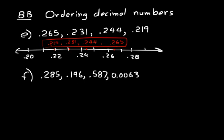Instead of .196, so that has to be smaller, it's in the ten thousandths place. .0063, that would be much less than .196.